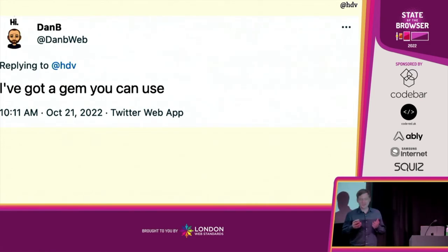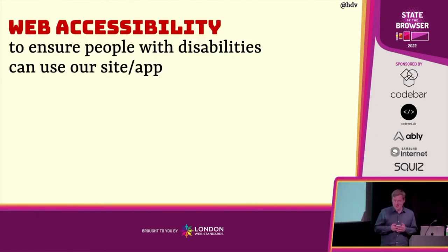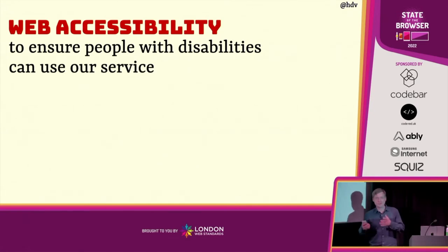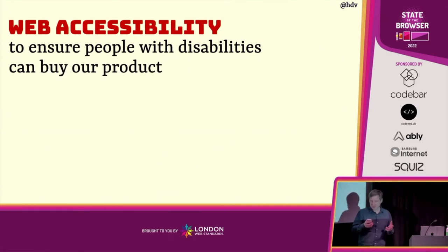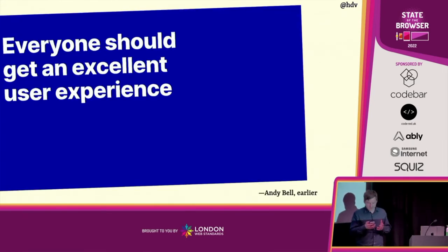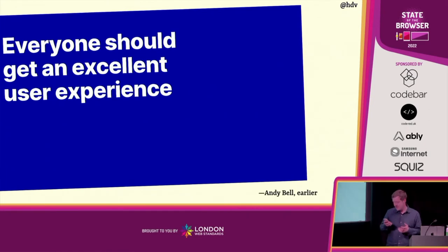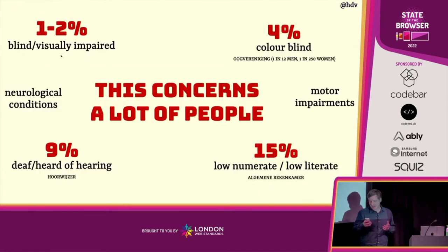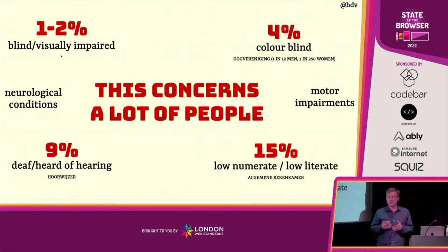I am here to talk about web accessibility — to ensure that people with disabilities can use your app. A way I like to rephrase it, depending on who I'm talking to, is making sure they can use our service, that they can buy our product. Basically, that everyone gets an excellent user experience. It is specifically focused on people with disabilities, and that is a really big group. As we've just seen, 15% of the people in the world have a disability.